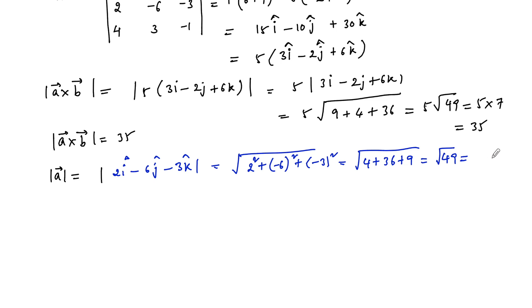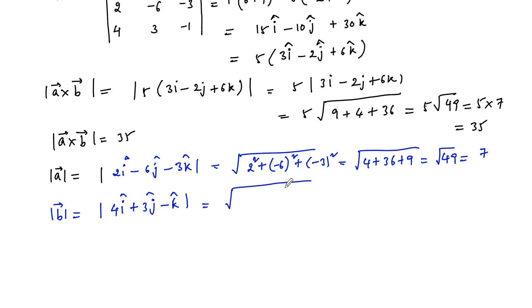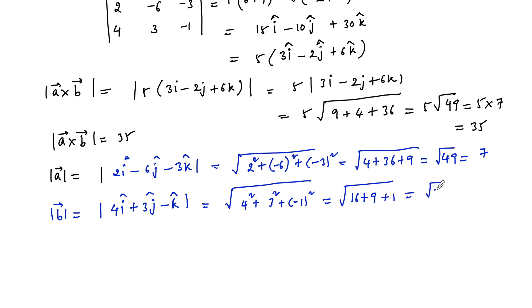And the modulus of vector b = 4i + 3j − k is equal to √(4² + 3² + (−1)²) = √(16 + 9 + 1) = √26.